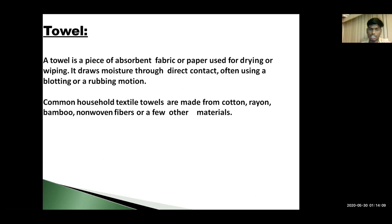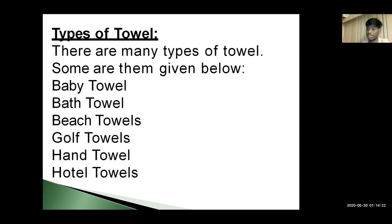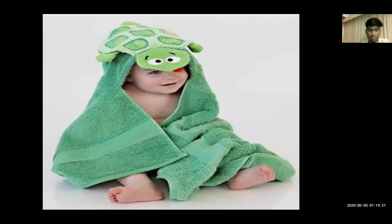Common household textile towels are made from cotton, rayon, bamboo, non-woven fibers, or a few other materials. We have different types of towels: baby towel, bar towel, beach towels, gawk towel, hand towels, and hotel towels. Now I will show you a towel worn by a baby.